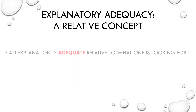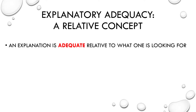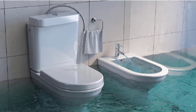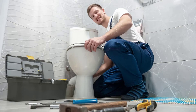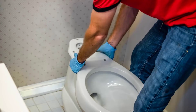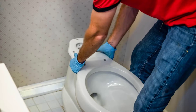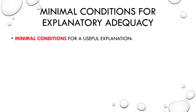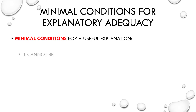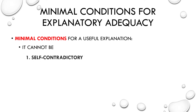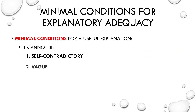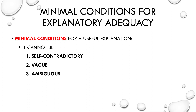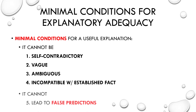A causal explanation can be considered adequate or satisfactory only relative to what we're looking for. For example, if there's water around the bathroom toilet, that it's leaking would be an adequate explanation for calling a plumber. That there's a bad wax ring is better if you want to fix it yourself, and if you want to prevent it from happening in the future, you want to know how it went bad in the first place. We can still establish some minimal conditions for adequacy: the explanation cannot be self-contradictory, vague, ambiguous, incompatible with established facts, and it cannot lead to false predictions.